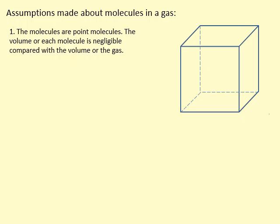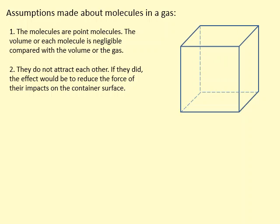Firstly, we're going to assume that the molecules are point molecules — in other words, the volume that the molecules actually take up is negligible compared to the volume of the gas itself. Normally if I draw the particles as large objects, the problem is they can't overlap, which makes calculations much more difficult. So instead we treat them as point particles, which makes our calculations easier.